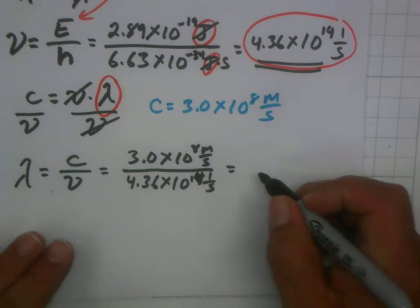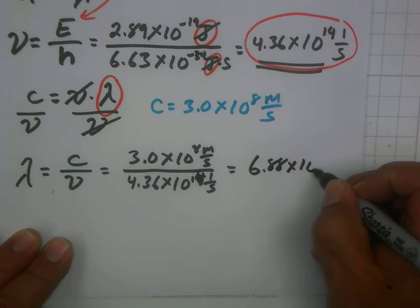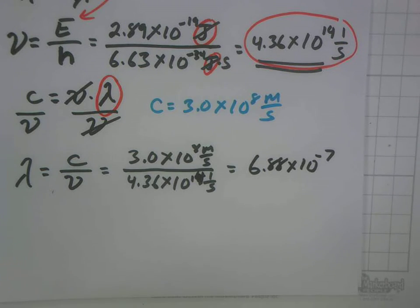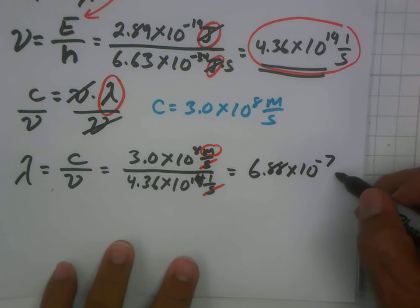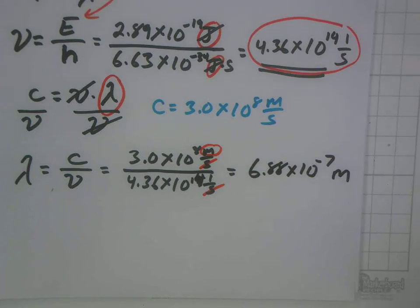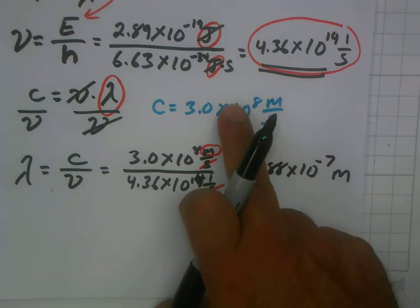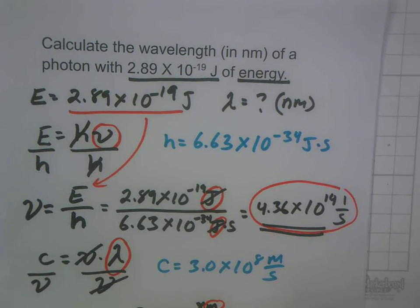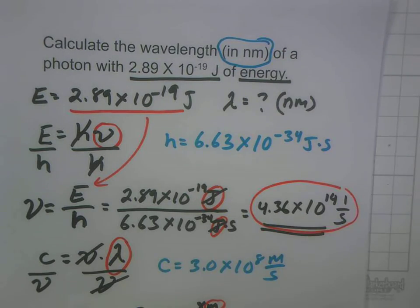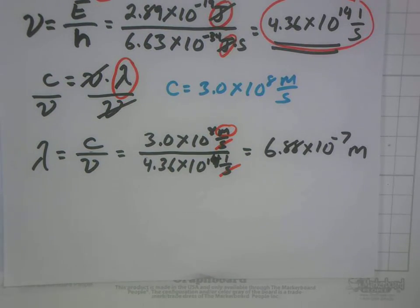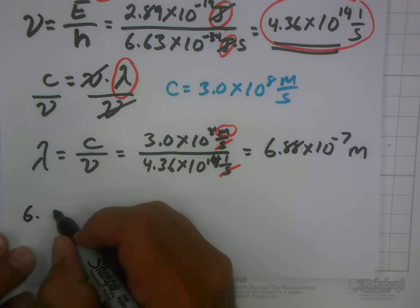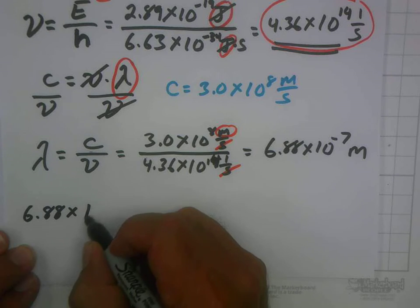So 6.88 times 10 to the minus 7th is our answer so far. The units: seconds cancel with seconds, leaving us with meters. So at this point we have a wavelength, but it's in meters. The question wants the answer in nanometers, so we just need to convert our meters into nanometers — we know how to do that from the conversion factor chapter.